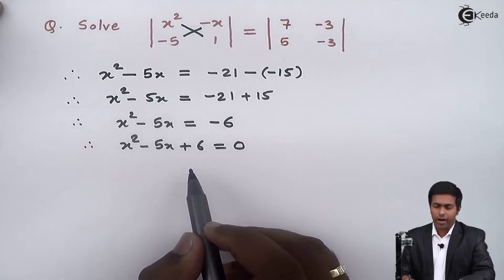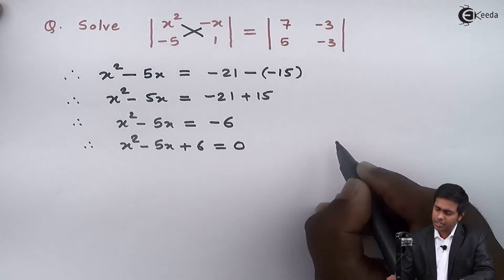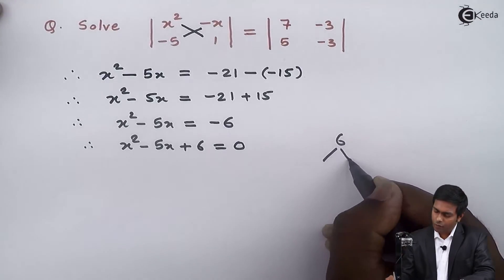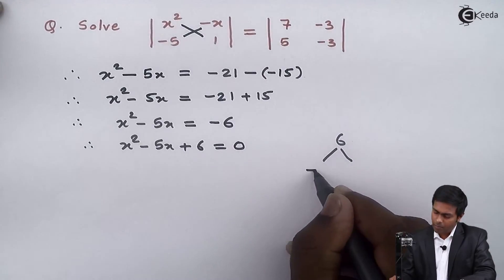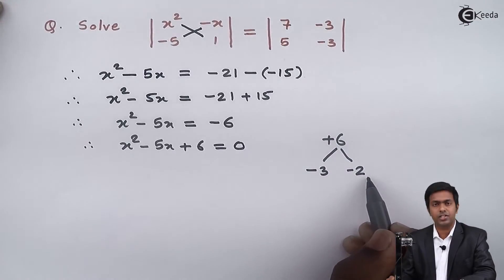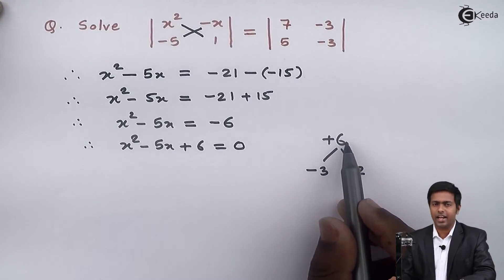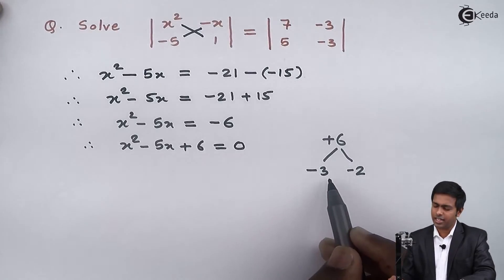So now we will find out the roots of quadratic equation to get the value of x. So now here the last term is 6 and for 6, if we will find the factors, then it is minus 3 and minus 2. So the multiplication of minus 3 and minus 2 is plus 6 and the addition of minus 3 and minus 2 is minus 5. So these are the factors.